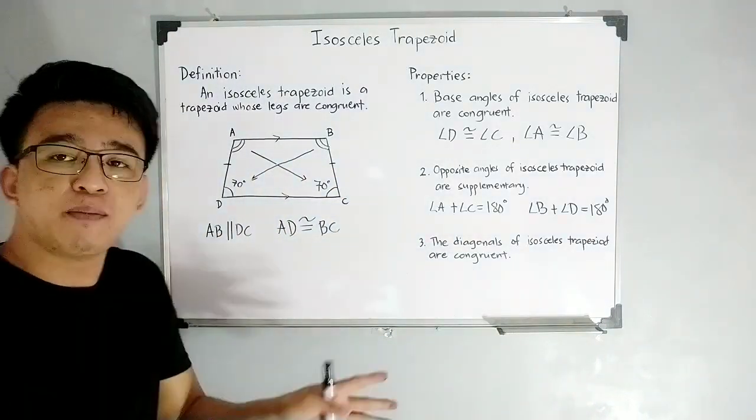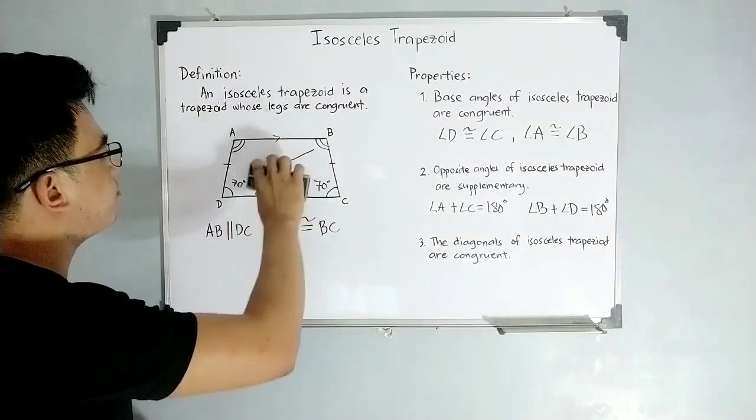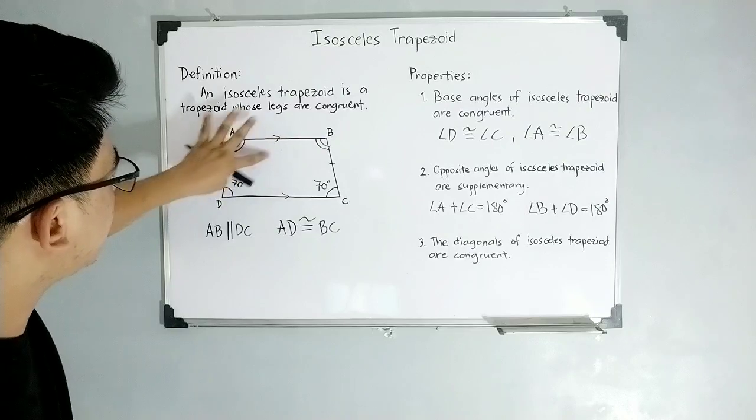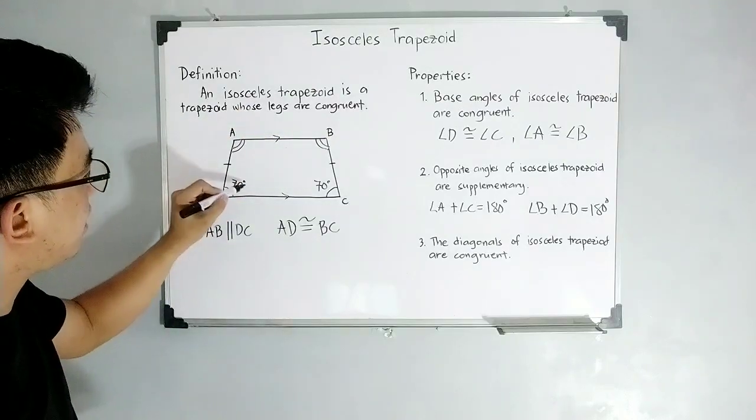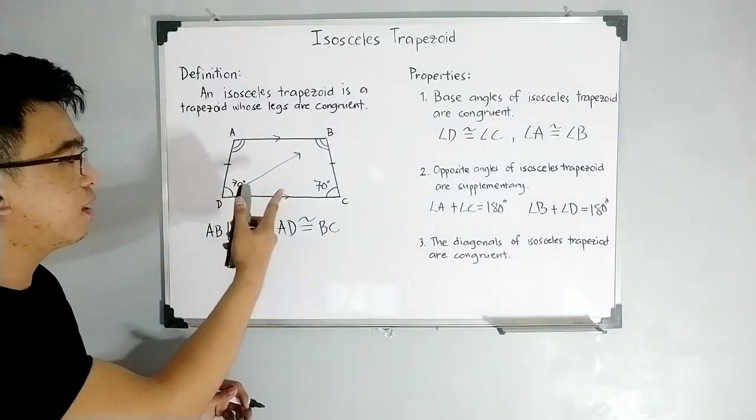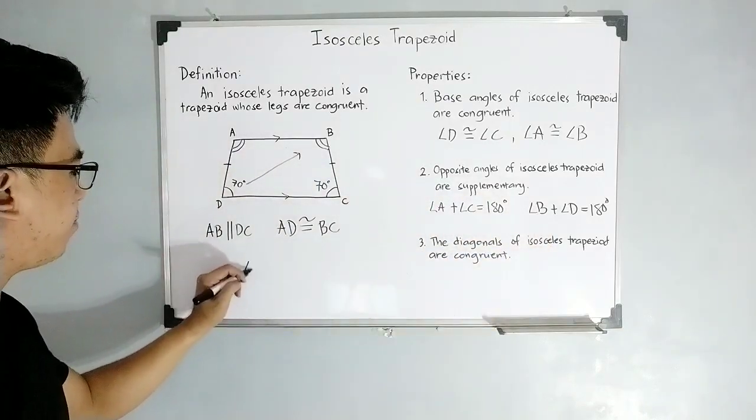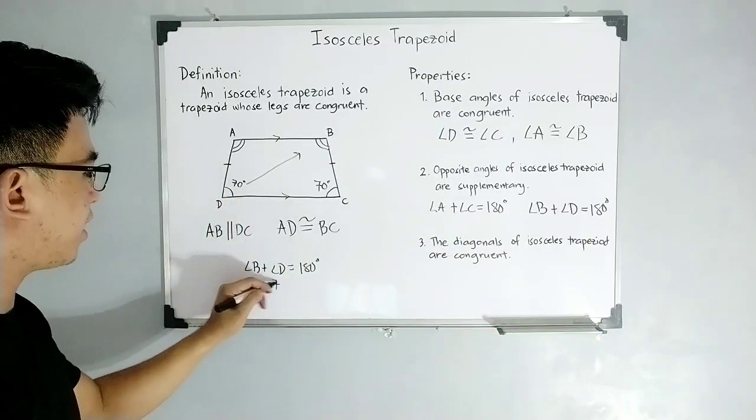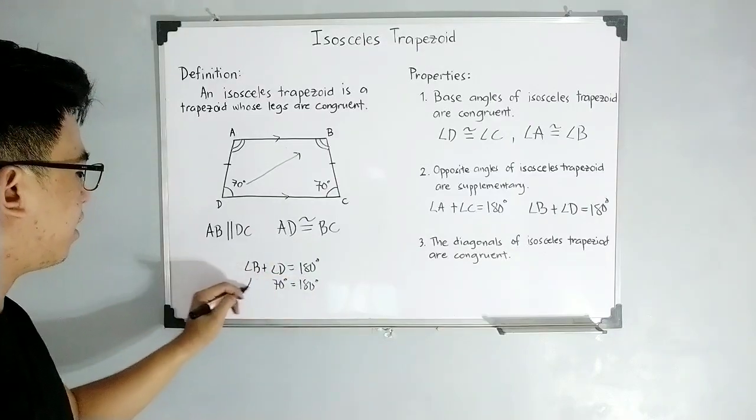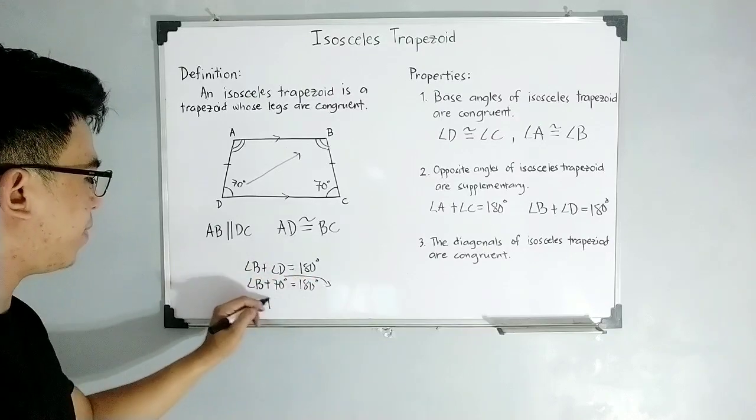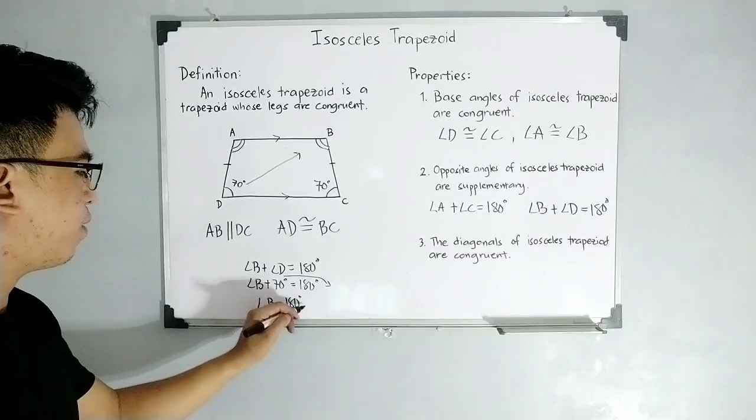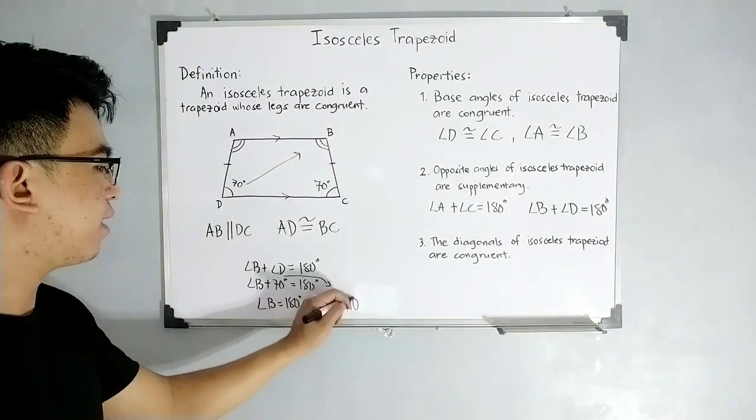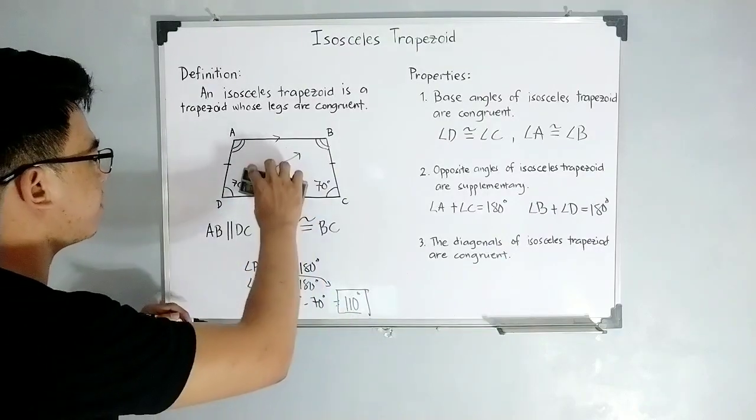So, sir, can you please apply that property? Yes, we can apply that property. So, let's say your angle D is 70. Since angle D is opposite to your angle B, what is the measurement of angle B? So, let's try with this equation. Your angle B plus angle D is equal to 180 degrees. Your angle D measures 70. So, you have 70 degrees is equal to 180 degrees and angle B. So, let's transpose. So, we can have B is equal to 180 degrees minus 70 degrees. And that will give you 110 degrees, the measurement of angle B, which is 110 degrees.